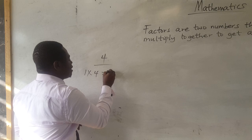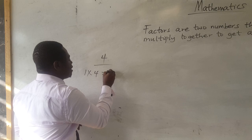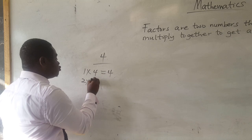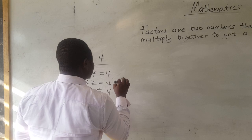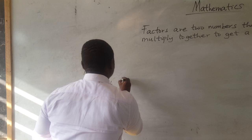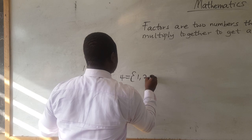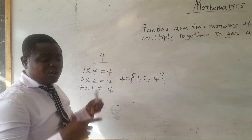One multiplied by four gives us four. Two multiplied by two gives us four. Four multiplied by one also gives us four. So meaning that the factors of four are one, two, and four itself. Good, that was what we learned last time.